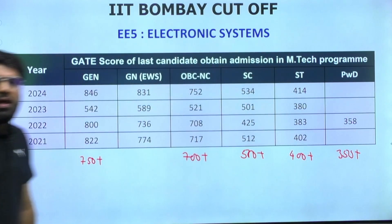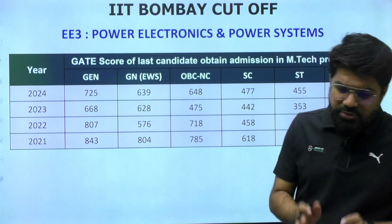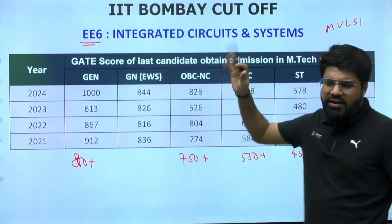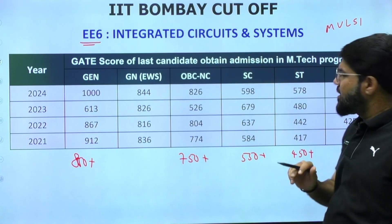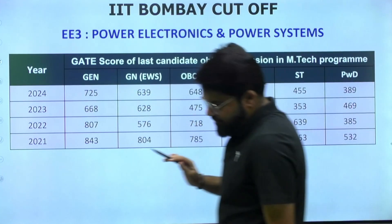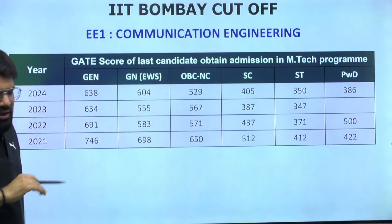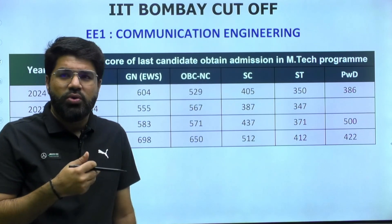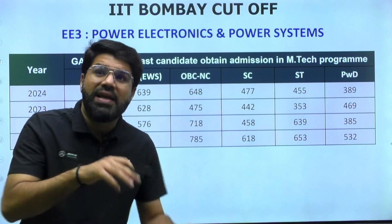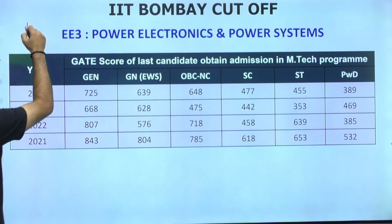As a third choice, it depends on your core branch. Both Electrical and Electronics students tend to prefer VLSI first, then Electronic Systems. If your core is Electrical, your third preference could be Power Electronics and Power Systems. If your core is EC, it would be Communication Engineering. I generally wouldn't recommend cross-branch picks unless you have a strong inclination.